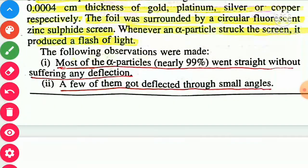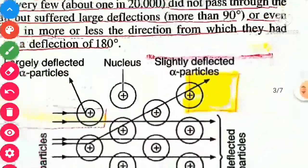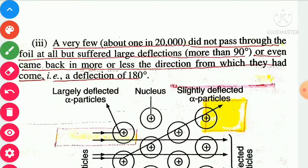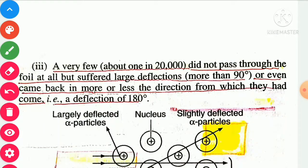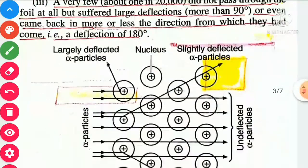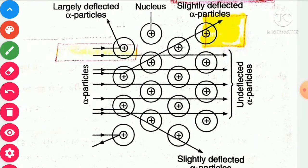A few of them got deflected through small angles. A very few particles — about 1 in 20,000 — did not pass through the foil at all, but suffered large deflections of more than 90 degrees, or even came back in more or less the direction from which they had come, that is a deflection of 180 degrees. So in summary: maximum alpha particles penetrated without deflection, a few deflected slightly, and very few deflected at more than 90 degrees or returned at 180 degrees.